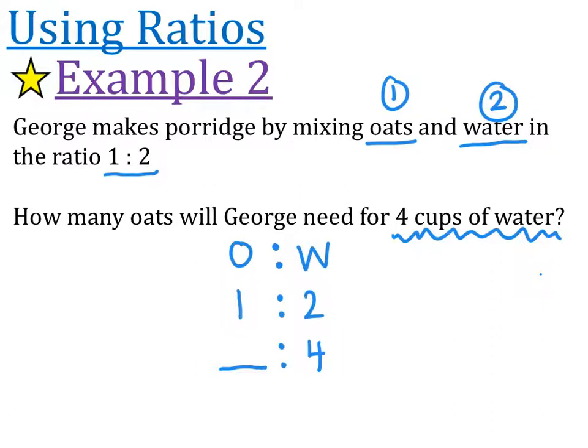So then we can go and ask ourselves, how do we get from 2 to 4? So to get from 2 to 4, we double that. We multiply by 2. So I also have to multiply the 1 by 2. 1 times by 2 is 2. He must need 2 cups of oats for his 4 cups of water. Alright, let's look at another one.